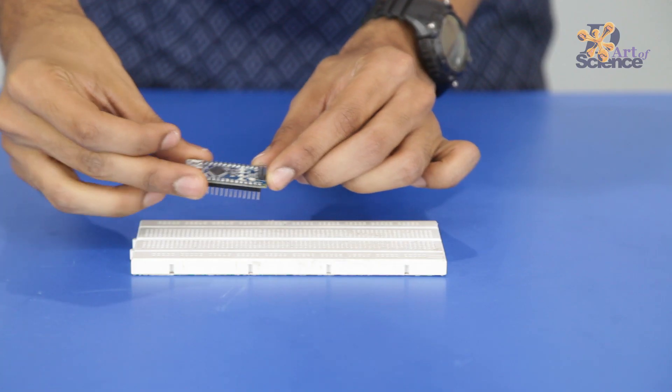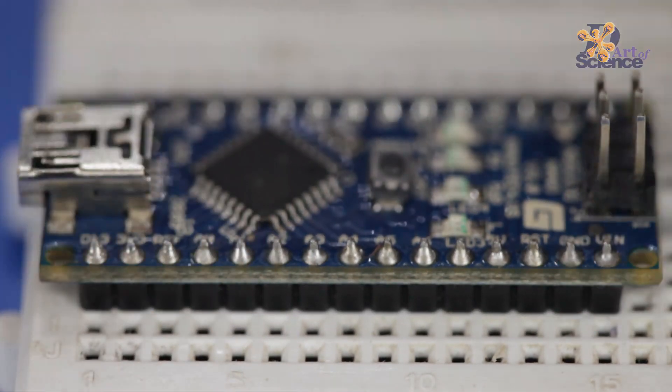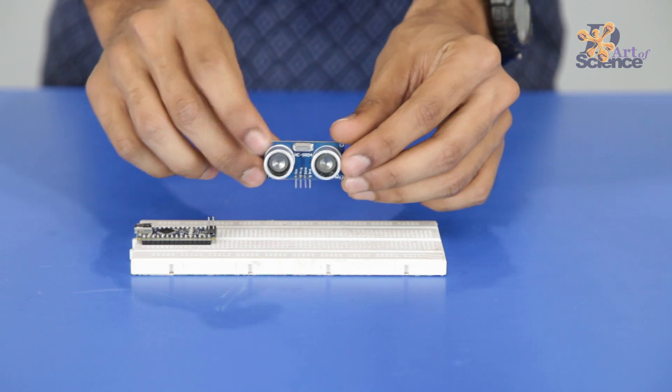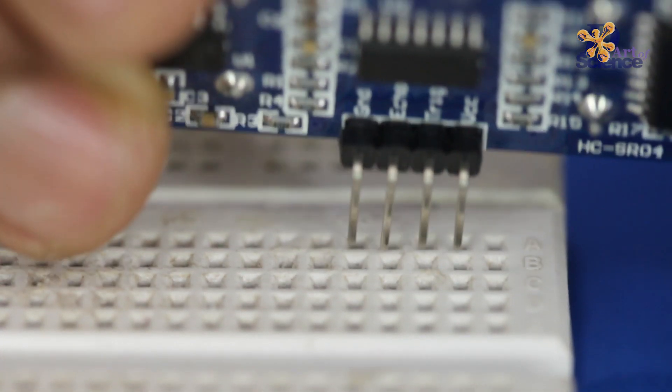Let's begin with the smart dustbin circuit by placing an Arduino Nano in a breadboard. For detection of humans we are using two ultrasonic sensors for wider range.